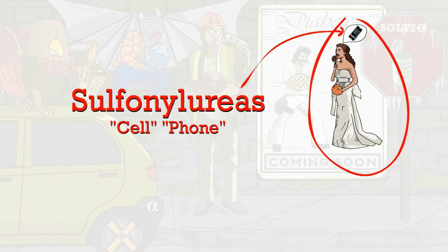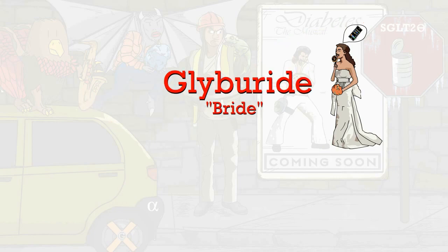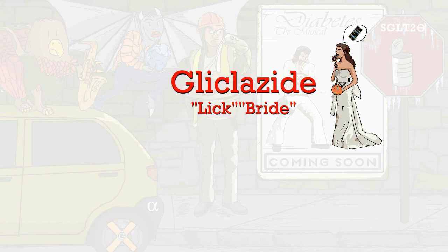Sulfonylureas are a class of drugs that are often used and is represented by the cell phone — sulfonylureas, cell phone. Some examples are Glybride, represented by the bride, and Gliclizide, which is a bride licking the lollipop.